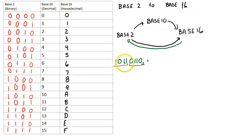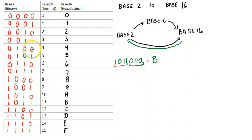So 1011 1011 is B, and 0110 0110 is 6, so that's B6 in base 16.